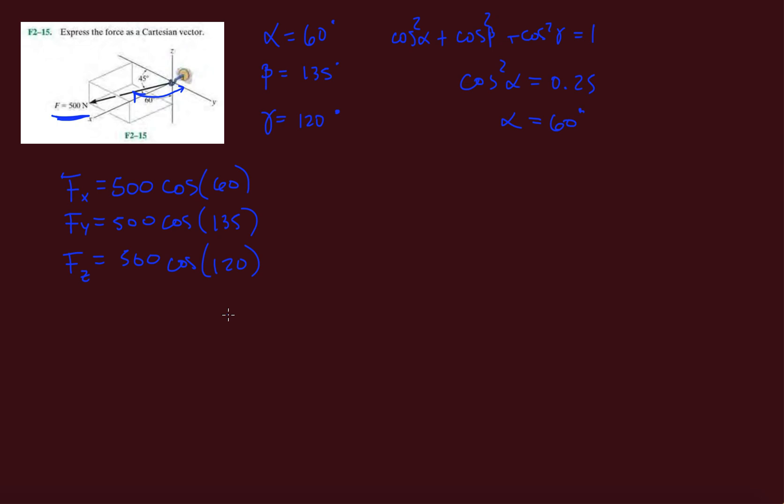So cosine 60. So it's very similar to the previous problem. So that's 250 newtons. This will be minus 353.6 newtons. And so it's pretty much like the opposite of the previous problem. And then finally, to answer the problem, F is 250i minus 353.6j minus 250k.